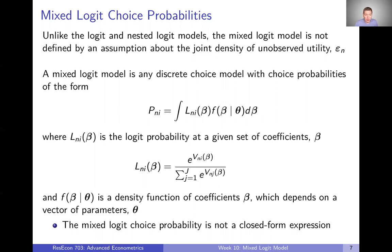The definition of choice probabilities for the mixed logit model is this integral form here in the middle of the slide. We're going to say that the choice probability — the probability that decision maker n chooses alternative i — is this integral, where we take the integral of this L object. This L object is a logit probability at a given set of coefficients. You can think of this L as the logit choice probability that we learned weeks ago. But then we're going to integrate this over our density of betas — the density of the coefficients that exist out there in the population — and that density is going to depend on some underlying parameters, theta.